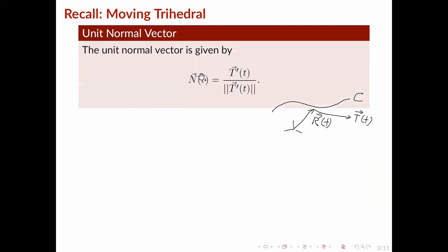Next we have the unit normal vector. This is defined as the derivative of the unit tangent vector divided by the magnitude of the derivative of the unit tangent vector. This is perpendicular to the tangent vector, so I'll draw it like this.